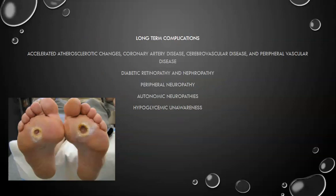Considering our goal of minimizing diabetes complications, poorly controlled diabetes can lead to accelerated atherosclerotic changes, coronary artery disease, cerebrovascular disease, and peripheral vascular disease. Diabetic retinopathy is damage to the small blood vessels that nourish the retina, causing vision changes. Nephropathy — kidney disease secondary to diabetes — is seen maybe 10 to 15 years into the disease, not right away. You'll see kidney disease develop roughly 10 years after initial diagnosis in cases of poorly managed diabetes.